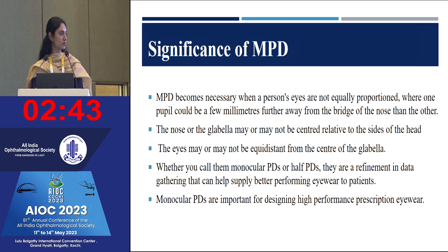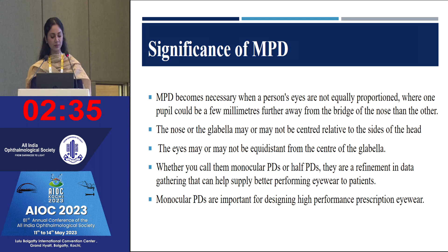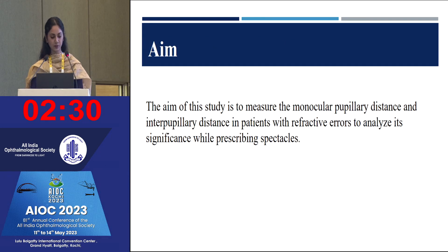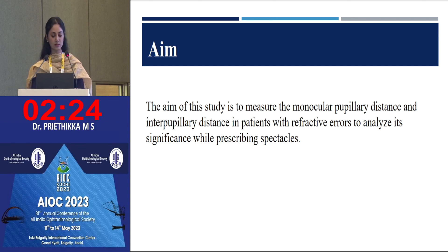Whether we term them as monocular PDs or half PDs, they are a refinement in data gathering that can help supply better performing eyewear to patients. Monocular PDs are important for designing high-performance prescription eyewear. The aim of this study is to measure the monocular pupillary distance and interpupillary distance in patients with refractive errors to analyze its significance while prescribing spectacles.